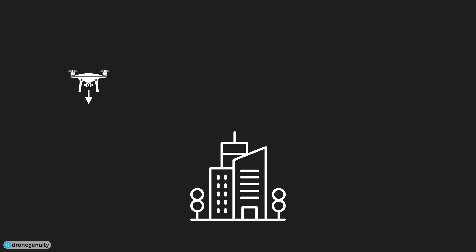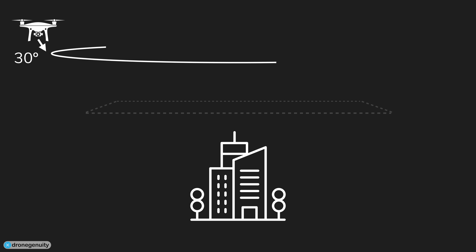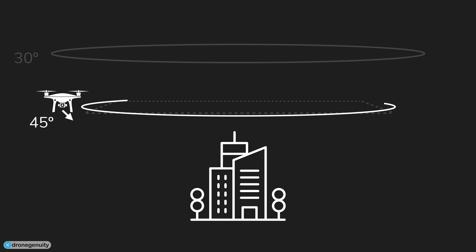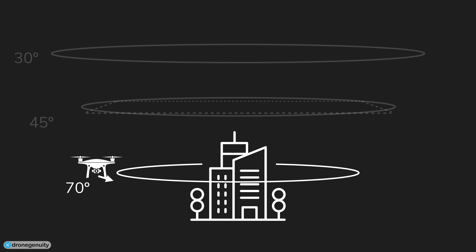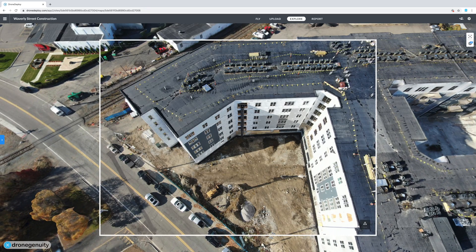The second thing you need to do is make sure you capture photos of your subject at different angles and altitudes. Typically, you want to capture straight down images from around 100 to 200 feet. Then, circle your subject at a high altitude with about a 30-degree angle. Next, fly at a middle altitude with around a 45-degree angle. And lastly, fly at a lower altitude with a 70-degree angle, adjusting your radius to keep the subject in frame. Capturing these different angles and altitudes helps create a higher quality 3D model by providing texture and image data of both the sides and the top of the building.